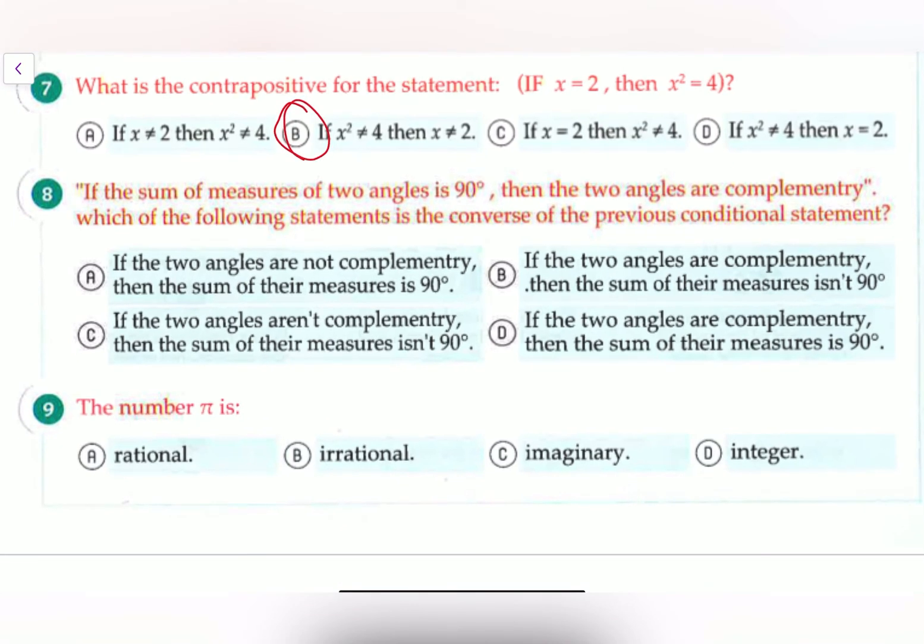Now let's move on to question number 8. Question number 8 says if the sum of measures of two angles is 90 degrees, it's a right angle, then the two angles are complementary. Which of the following statements is the converse of the previous conditional statement? So when we try to find the converse of the conditional statement, we have to replace the hypothesis by the conclusion. So it's kind of similar to contrapositive, but we do not deny them. So all we have to simply do is replace this by this.